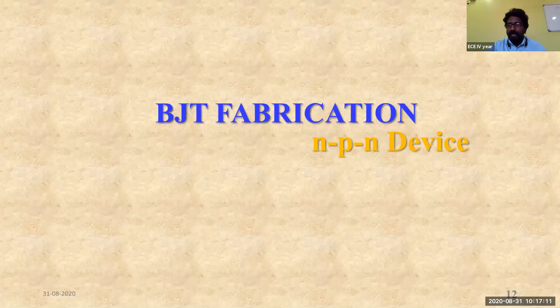Earlier they used to call this transistor as a point contact transistor. Then, knowing about the term bipolar, they switched to the advantage of bipolar and named it as a Bipolar Junction Transistor, which was invented in the early 1948s and initially known as a simple junction transistor.